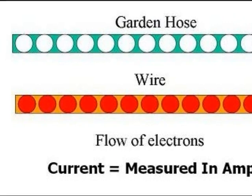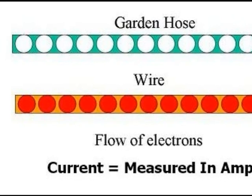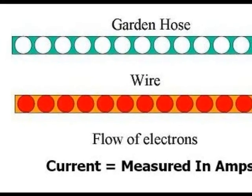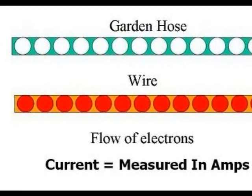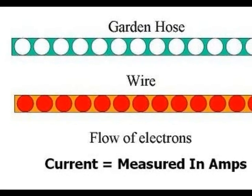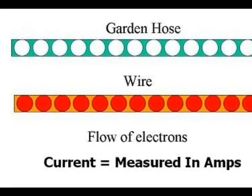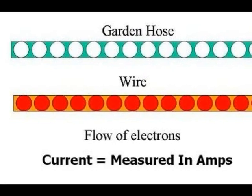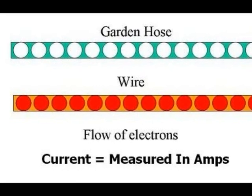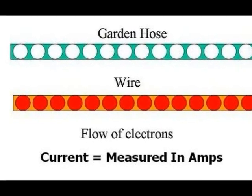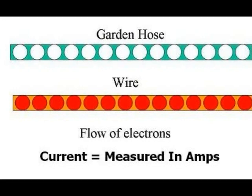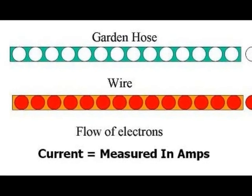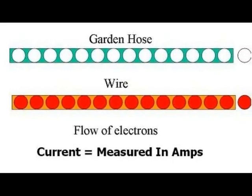We can measure the intensity of our flow of electrons by measuring the current. Current is measured in amps. Amps is the amount of electron flow through our path. The higher our source, the more flow there will be. The less resistance, the more flow there will be.